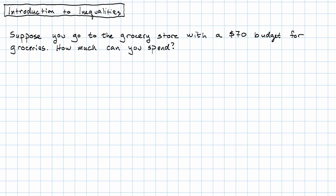How much can you spend? Well, if you spend $30, that's okay. You didn't spend the whole $70, but you didn't go over budget. If you spend $40, that's okay. If you spend, say, $67, that's okay. Spending the whole $70, still okay. But if you spend, say, $75, that's not okay. You went over budget.